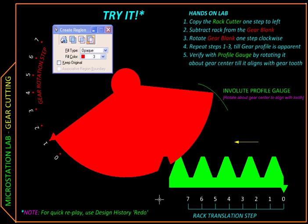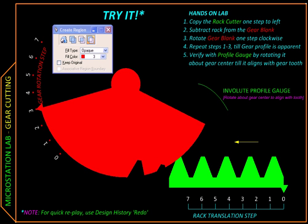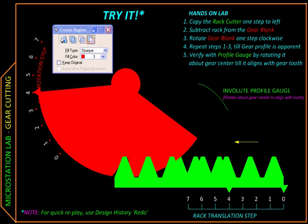And we'll be repeating this process over and over again. So we rotate the blank, advance the rack cutter, and make a cut. Again, we rotate the blank, advance the cutter and cut it. Rotate the blank, advance the rack cutter and cut.